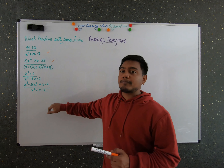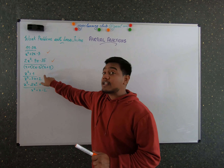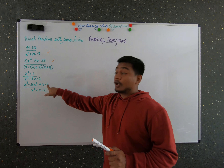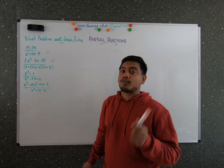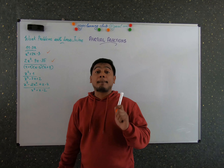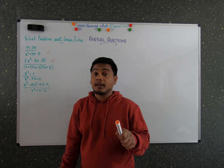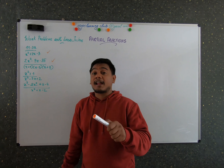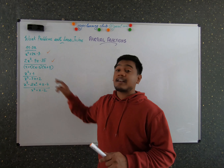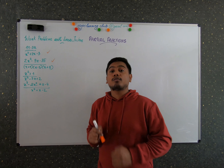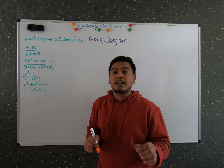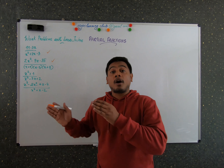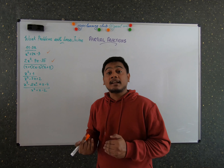In these two problems, in the first problem the numerator degree is the same as the denominator, and in the second problem the numerator degree is greater than the denominator. So what is the condition for doing partial fractions? The denominator's degree should be greater than the degree of the numerator, but in the first case it is not. So we have to first do polynomial division and reduce it such that the degree of the numerator is less than the denominator.